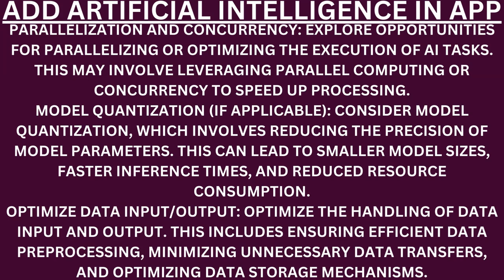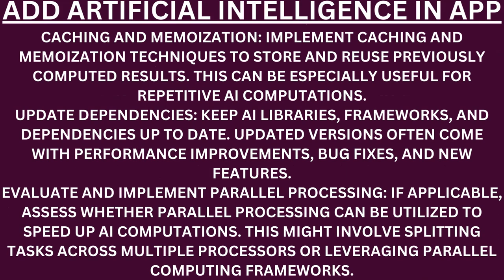Model quantization. Consider model quantization, which involves reducing the precision of model parameters — this can lead to smaller model sizes, faster inference times, and reduced resource consumption. Optimize data input-output. Optimize the handling of data input and output, including ensuring efficient data preprocessing, minimizing unnecessary data transfers, and optimizing data storage mechanisms. Caching and memoization. Implement caching and memoization techniques to store and reuse previously computed results — this can be especially useful for repetitive AI computations. Update dependencies. Keep AI libraries, frameworks, and dependencies up to date — updated versions often come with performance improvements, bug fixes, and new features.